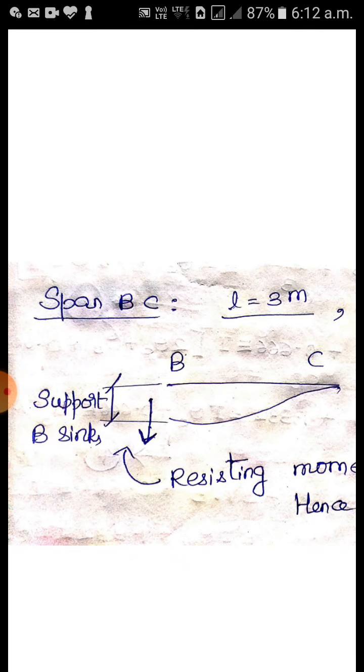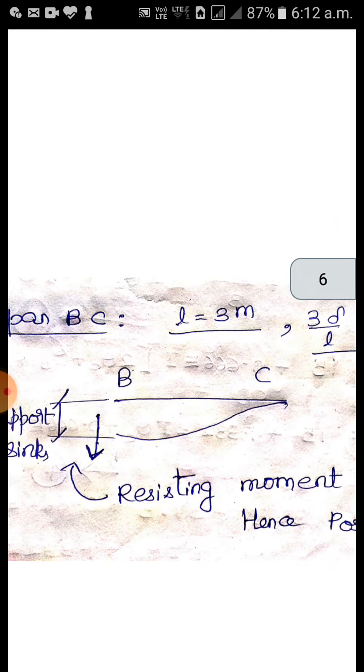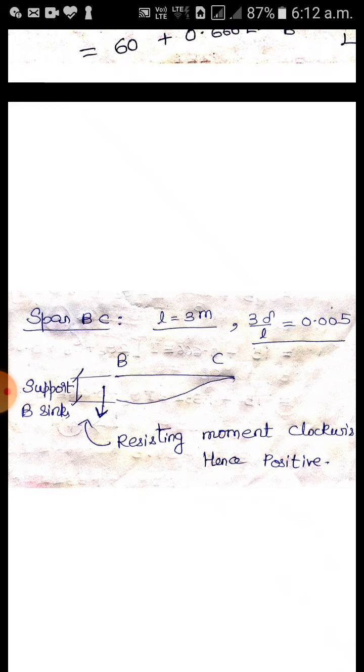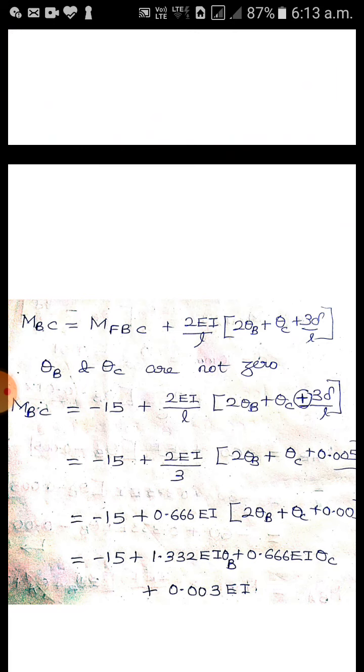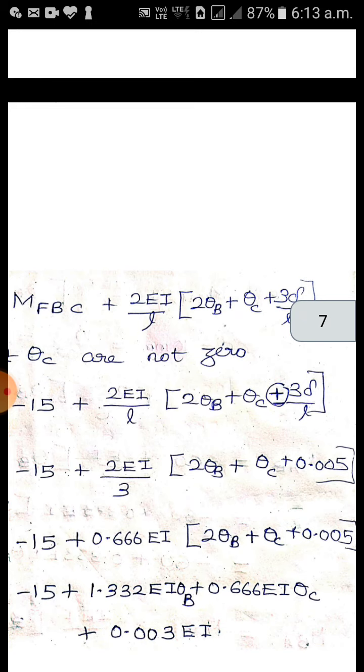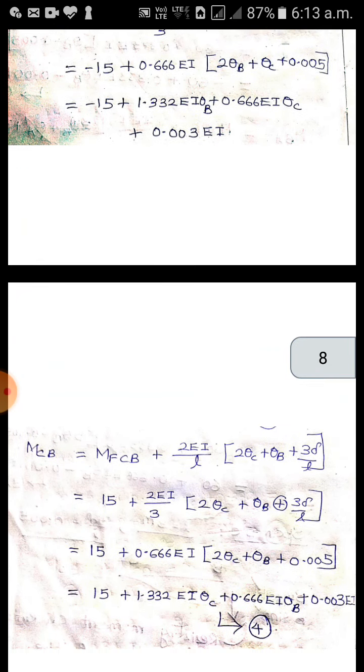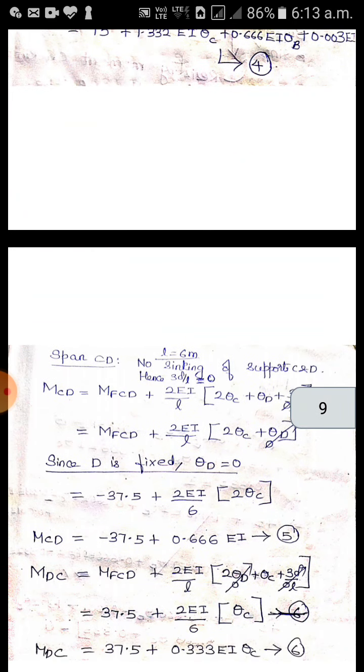Now coming to span BC, again the important part. B is falling down, so how will you catch it? In this direction. So the resisting moment is clockwise, hence positive. Apply the same example of catching a child. For span BC, again the support resisting moment 3 delta by L is positive. For AB it was negative, here it is positive. Try to understand, if you have any doubt repeat the video or ask me. So for span BC, 3 delta by L is positive. M_BC is equal to MF_BC plus 2EI by L times 2 times theta_B plus theta_C plus 3 delta by L. Remember theta_B and theta_C are the continuous support or intermediate support. So theta_B and theta_C are not 0. And plus 3 delta by L. Apply all the values, you get the equation for M_BC.